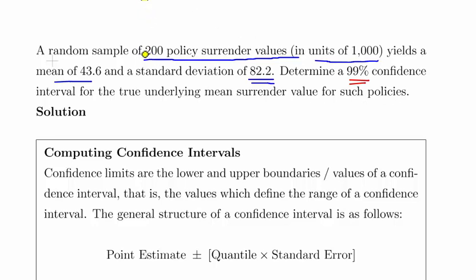Determine a 99% confidence interval for the true underlying mean surrender value for such policies. So this is straightforward enough. Just something to remark upon is that we have a large sample size here, and also just to note that in this instance we're going for a 99% confidence interval.